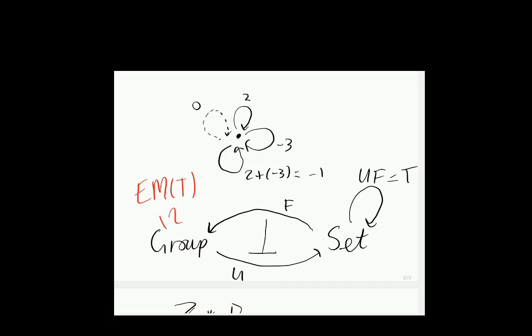This adjunction is worth looking at because it's a very natural operation to take a group, forget about its group operations, and get the underlying set. It turns out that the left adjoint basically makes what we could call free groups - we can take a set and use that set of elements to freely make a group. This turns out to be really essential for the basic structure of the category of groups. To understand this, we're going to need two things: the group Z of integers, and the notion of co-product.